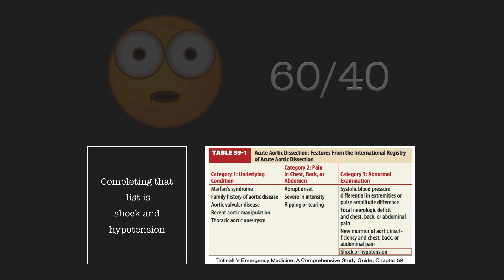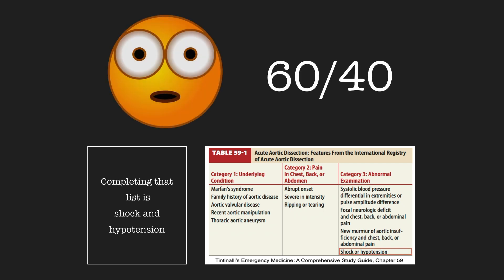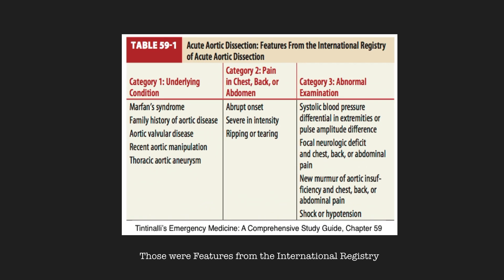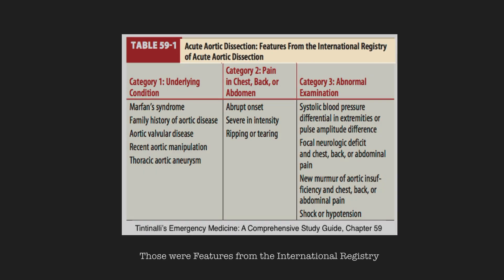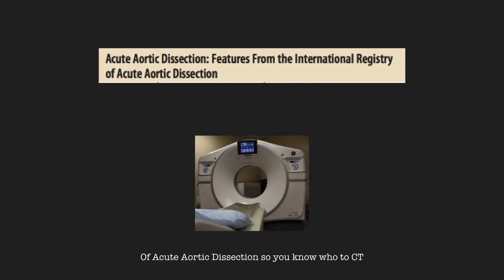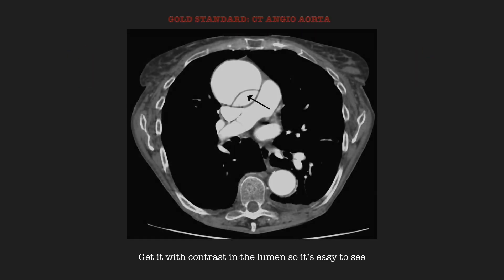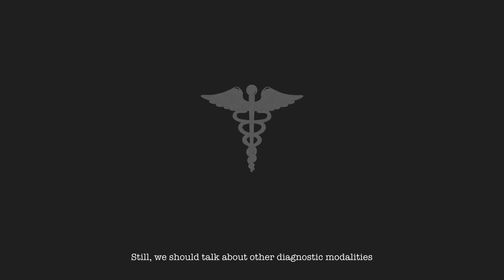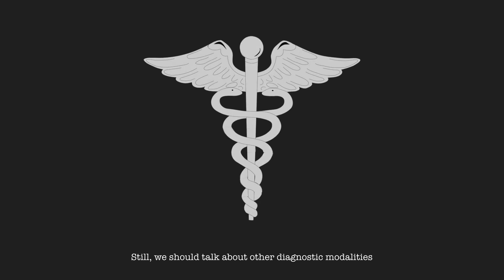Completing that list is shock and hypertension, and I'll mention why it's important just this once. Those are features from the International Registry of Acute Aortic Dissection — so you know who to CT. Get it with contrast in the lumen so it's easy to see. Still, we should talk about other diagnostic modalities.